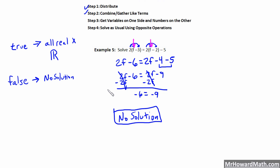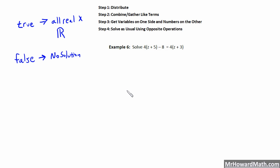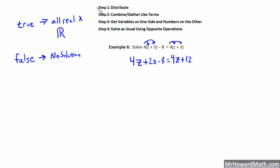Let's look at example 6. We have step 1: distribute. We distribute 4 times z is 4z, 4 times 5 is plus 20, then we still have minus 8. That equals 4 times z is 4z, 4 times 3 is plus 12. Step 2: gather and combine. Nothing to do on the right. On the left, 20 minus 8 simplifies to 12. So we have 4z plus 12 equals 4z plus 12.